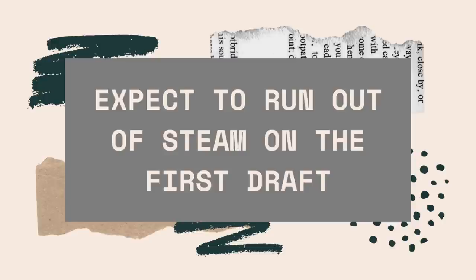Tip four: expect to run out of steam in the first draft. Whether you do any planning or plotting in advance or not, you're very likely to run out of steam somewhere around 20% to 60% into the first draft. This is really really common with methodological pantsers, and it can be extremely helpful to expect this to happen so that you're not disappointed or disheartened. A lot of writers interpret this as meaning that the idea isn't a good one and that they should just move on to a different project.